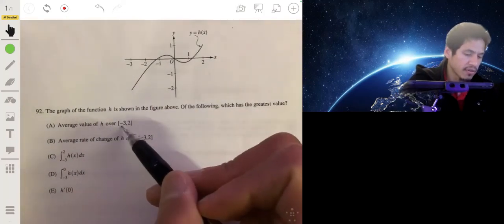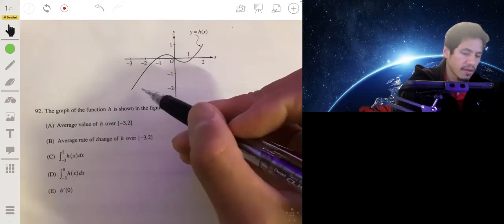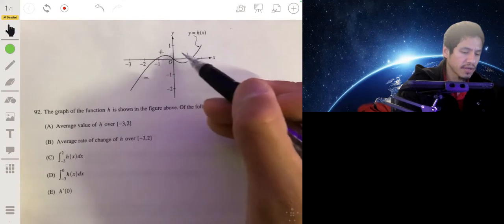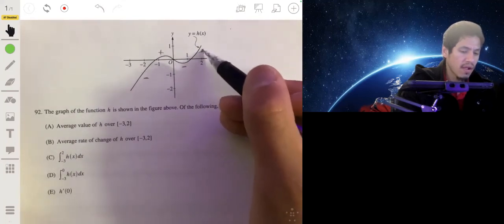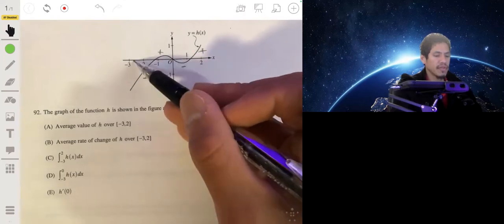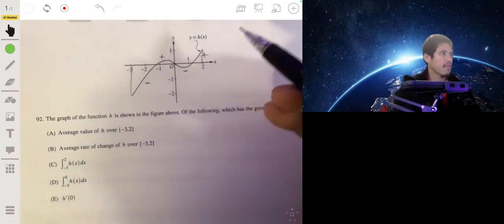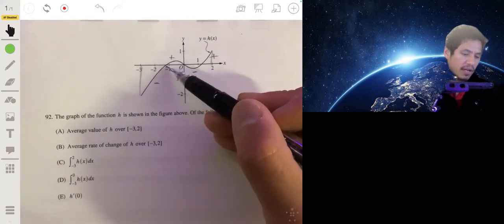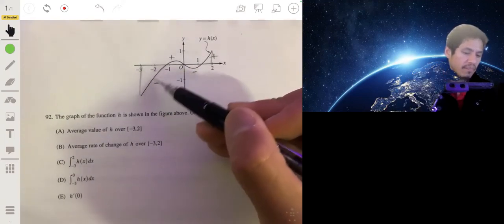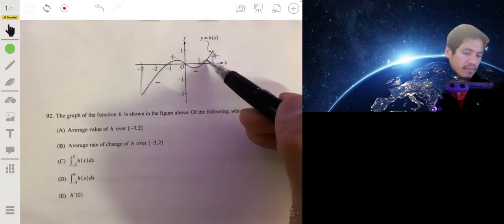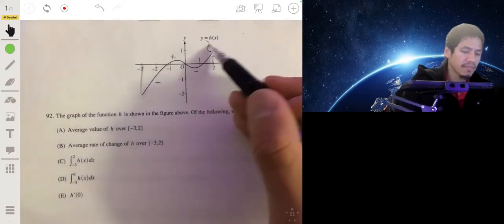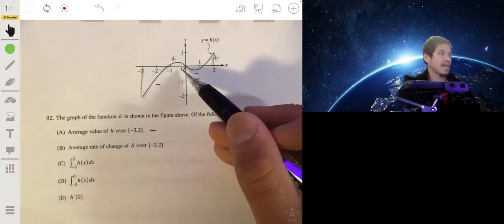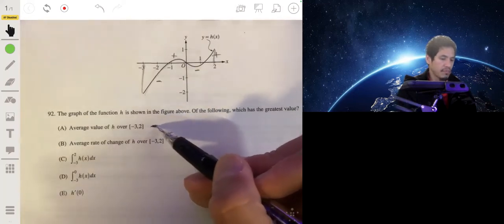So the average value of H over -3 to 2. This is a graph of H. The graph is negative over here, positive over here, negative here, positive over here. We don't actually need to know these integrals exactly because this graph makes it pretty clear that there's a lot more negative area. This graph is negative for a longer time and much more extreme than it is positive here and here combined. So the average value would be negative. It definitely spends more time underneath the x-axis than above.